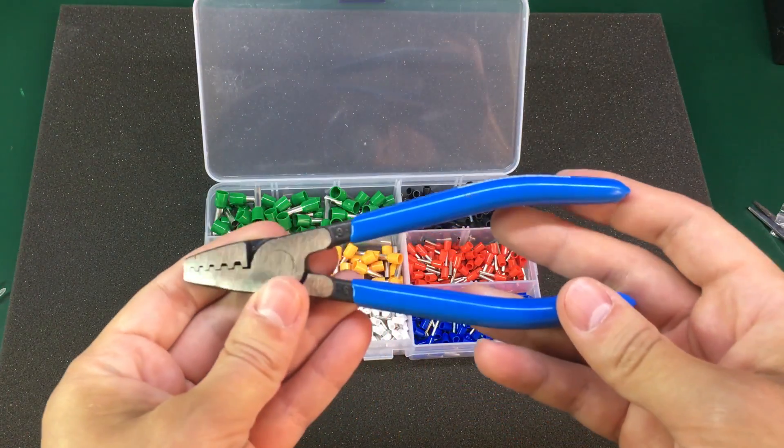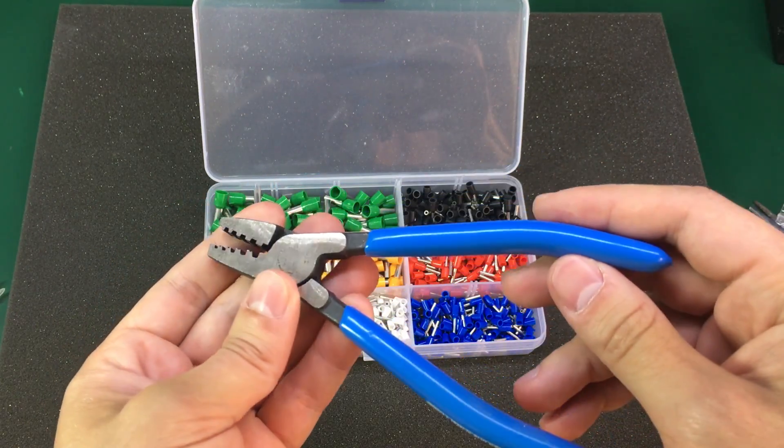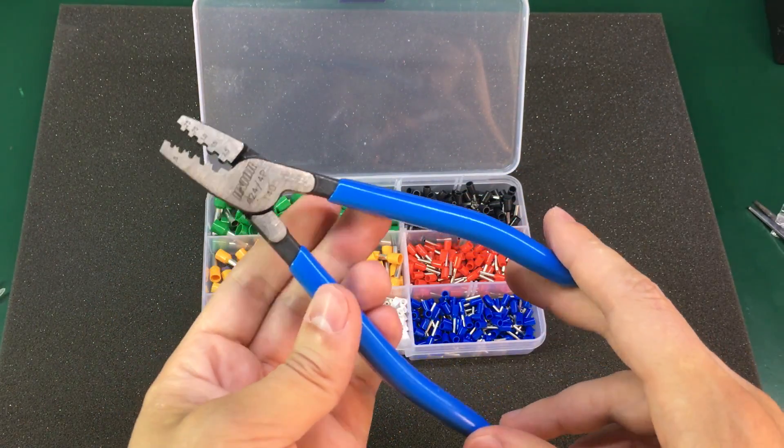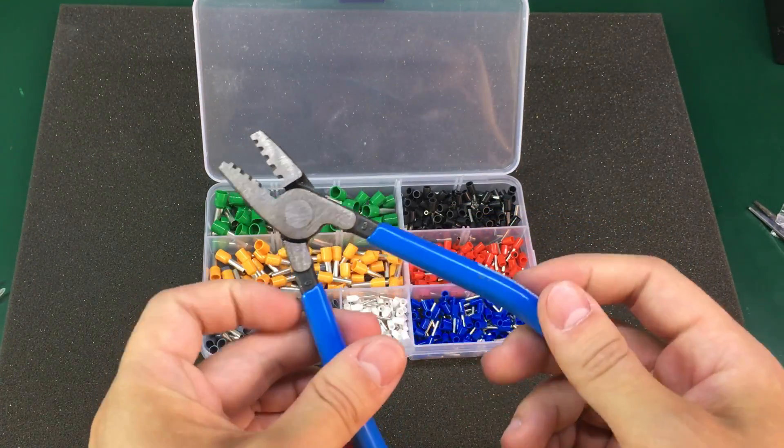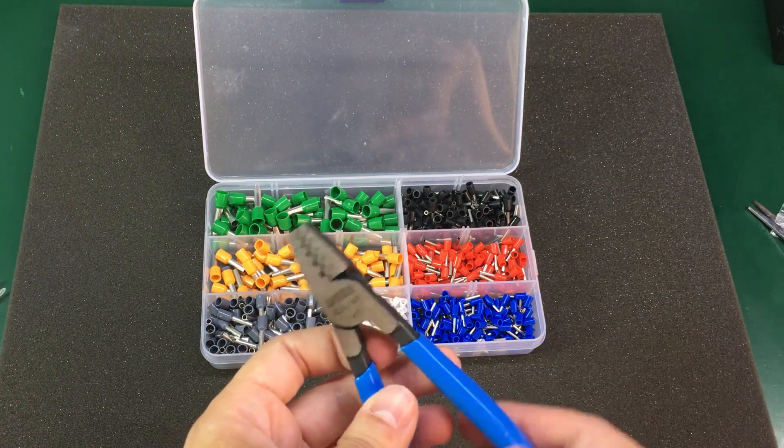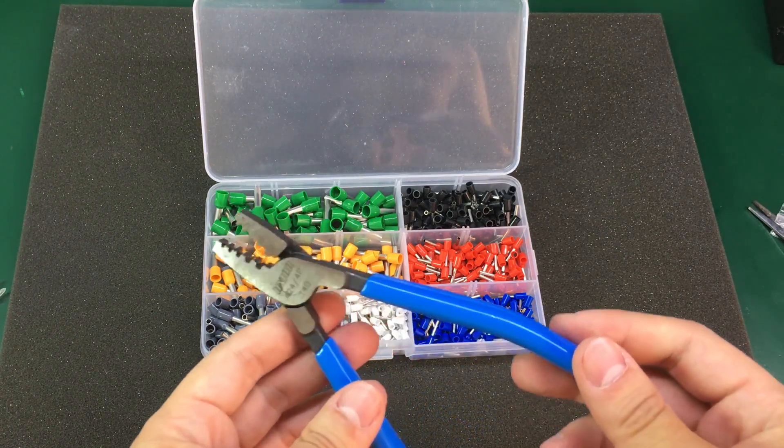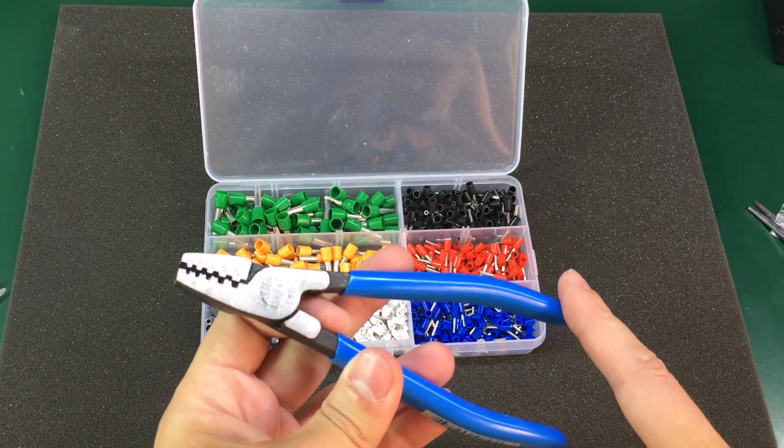I'm using this simple crimping tool from UNIAR. Well it's simple but it wasn't cheap. I remember paying about 30 dollars for these crimping tools. But it's been good. I've been using it for a couple of years and I think I've crimped more than a couple of thousand ferrules and it's still holding up very well.